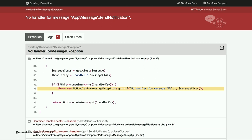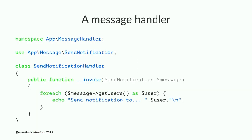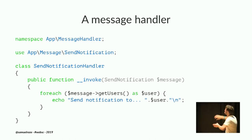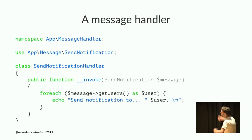If you actually do that, you'll get a beautiful error message that says there is no handler for this message. By default, you need to have a handler. So you need to create this handler — the fourth concept. A handler is just a simple class or callable. You create a class with the `__invoke` magic method so that your class instance is a PHP callable. It gets the SendNotification message and does whatever it needs to do.